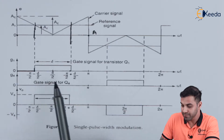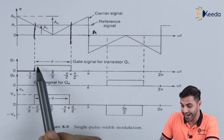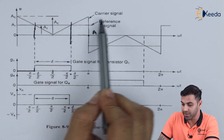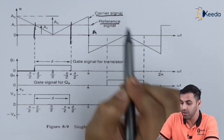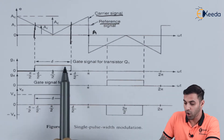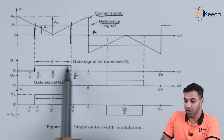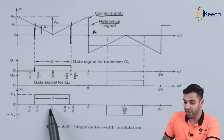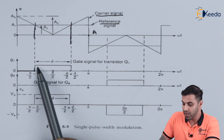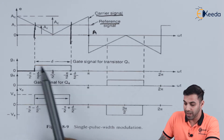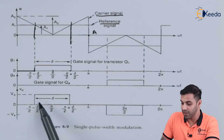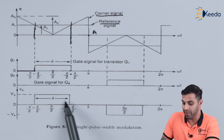As we are getting a gate pulse because of the pulse width modulation, we can change the width of the carrier signal so that we can vary the on-time of the transistor. As we vary the on-time of the transistor, we can vary the inverter output voltage. So if the width of the gate pulse that we are getting as an output of the comparator after pulse width modulation is D, the width of the output voltage we will be getting is also D.